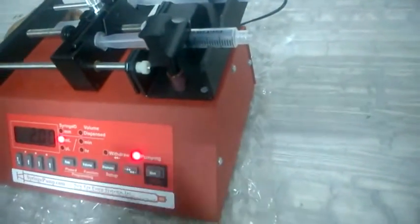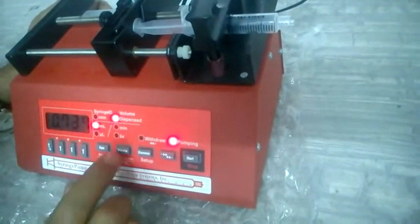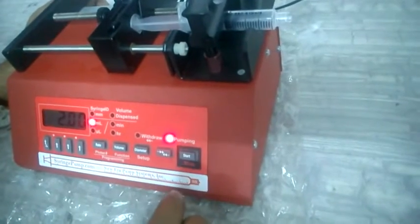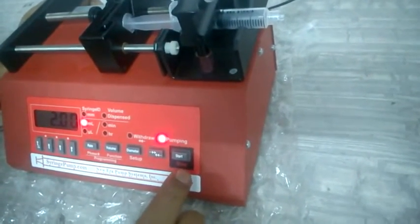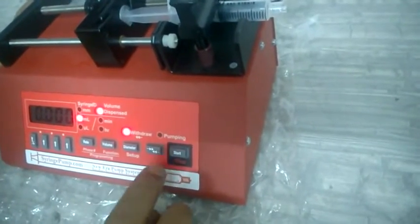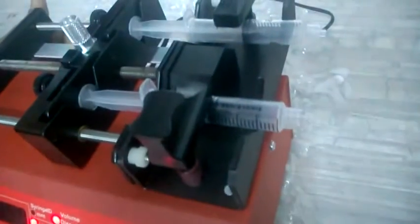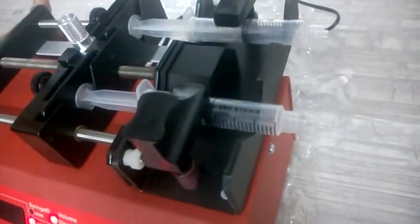If you want to see the dispense volume, press the volume and it will show the dispense volume. If you want to withdraw, just stop it, press this arrow key and this has come to withdraw. Again press start. So now the pump is withdrawing or taking the solvent in.